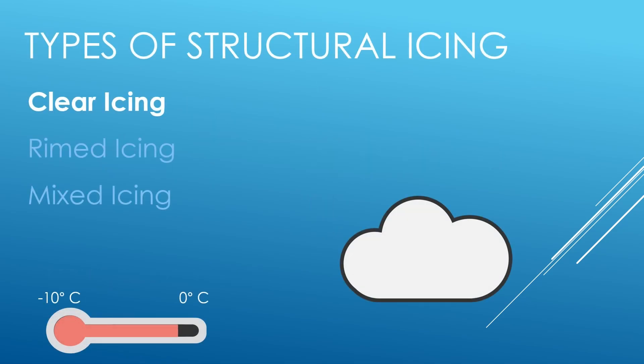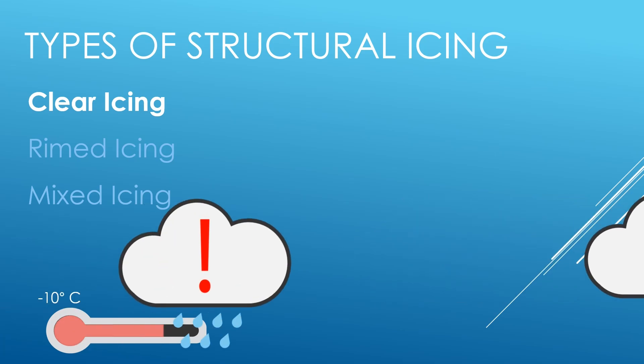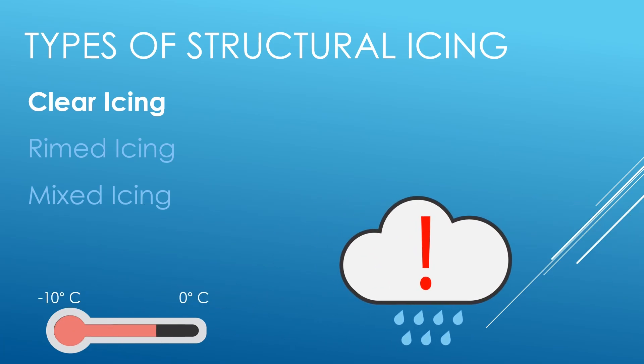Clear icing forms in the presence of visible moisture such as precipitation, fog, or cloud, typically at temperatures from 0°C to -10°C. It forms from supercooled water droplets in clouds and in freezing rain beneath the temperature inversion layer. Clear icing is the most dangerous type because it's difficult to see when it's accumulating, it can accumulate rapidly, and it can form on areas of the aircraft that don't have ice protection systems.